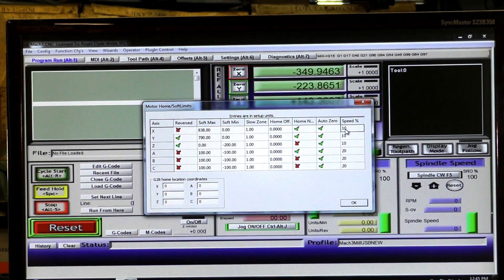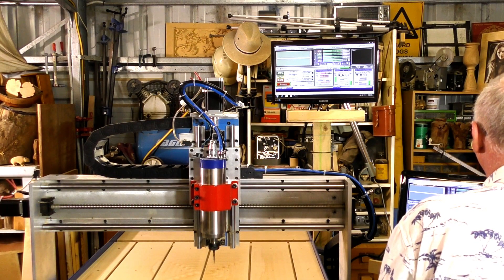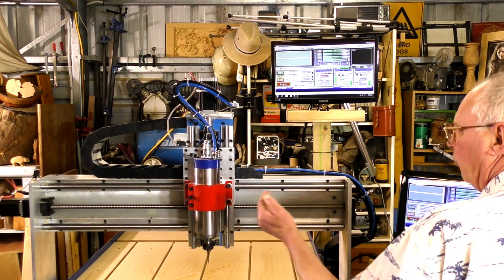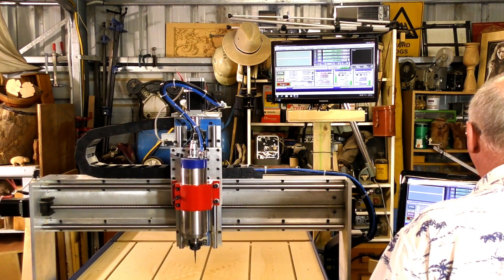So we can change that to, shall we say, 30%. 30% of the total jog speed. Press OK. OK, press Riffle. And you can see it's noticeably quite a bit faster.